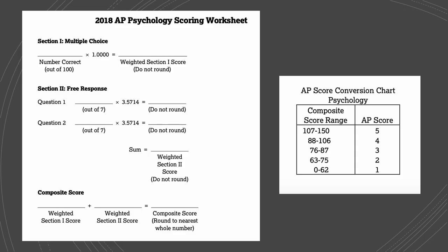Your score from 1 to 5 is calculated based on the weighted score from two sections: multiple choice and free response. The multiple choice has 100 questions, each worth one point. The free response has two questions of equal weight. They are added together for the total score, with score ranges determining your final AP score. The ranges vary slightly each year, but I'm giving you an example of the ranges for a 3, 4, and 5.